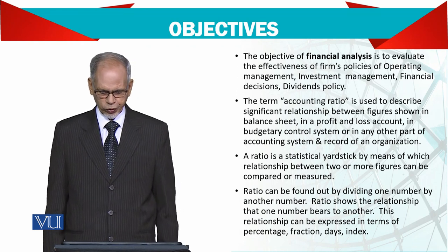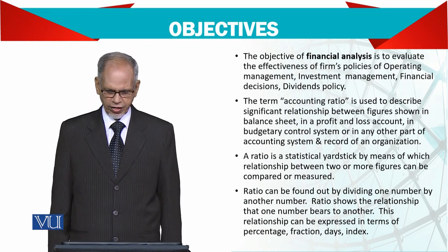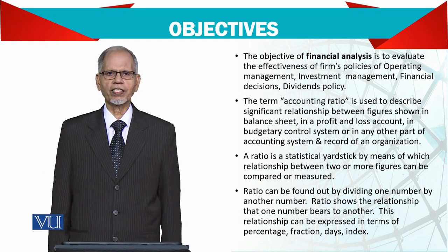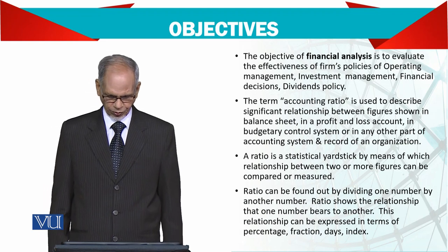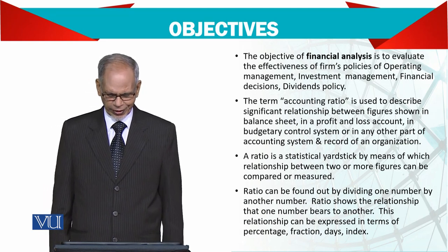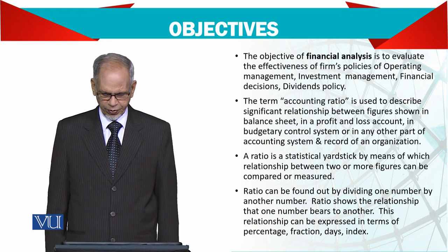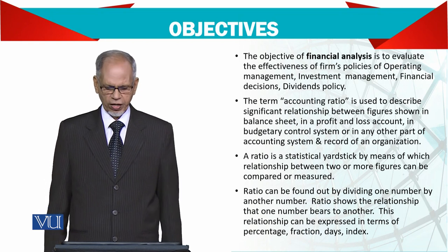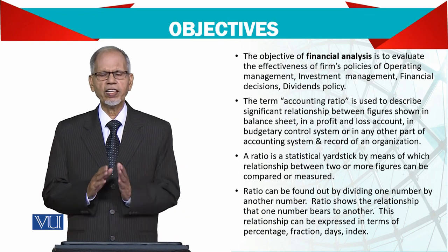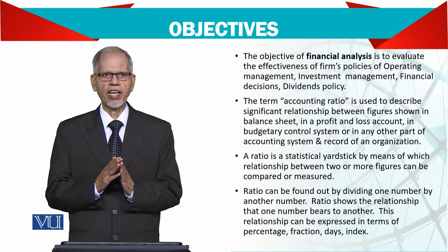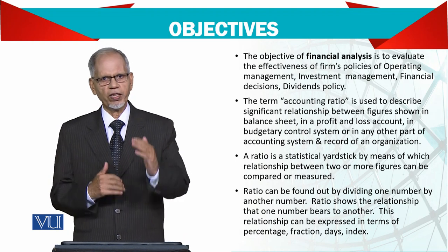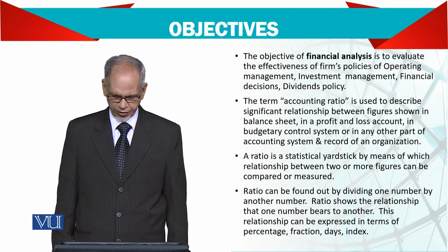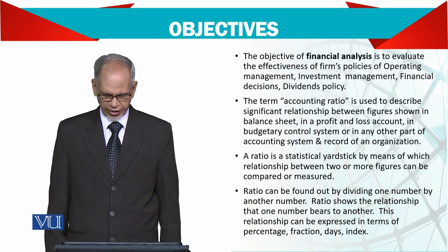The term accounting ratio is used to describe significant relations between figures shown in the balance sheet, profit and loss account, and sometimes in the cash flow statement. A ratio is a statistical yardstick by means of which relations between two or more figures can be compared or measured. Sometimes we add one, two, or three figures and then come up with the result. A ratio is found by dividing one number by another.